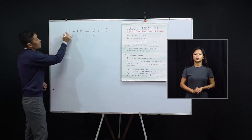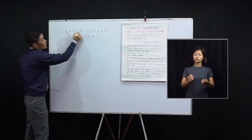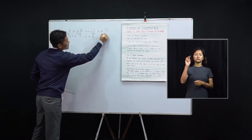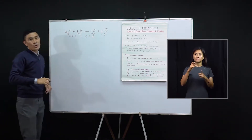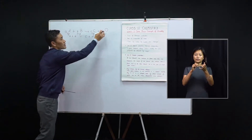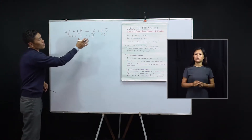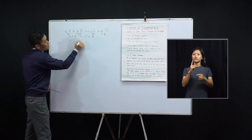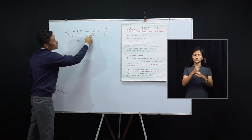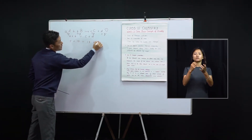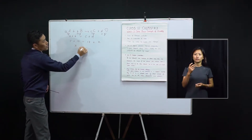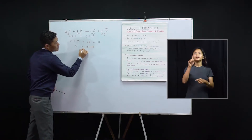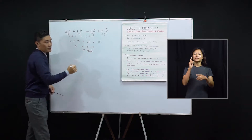Suppose 5 grams of A reacts with 10 grams of B to give 13 grams of C and X grams of D. What should be the mass of D produced in this reaction? Using this law, the total mass of the reactants, that is 5 plus 10 grams, will be equal to the total mass of the products, that is 13 plus X grams. Therefore, X equals 5 plus 10, that is 15 minus 13, giving us 2 grams of product D.